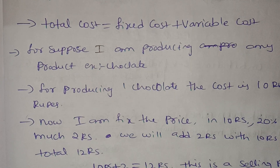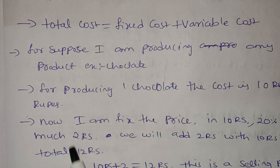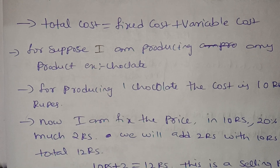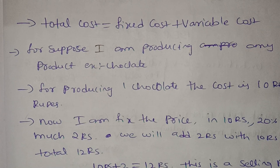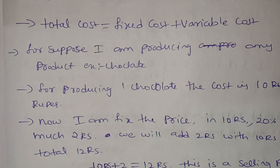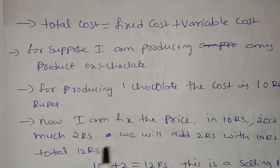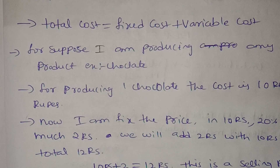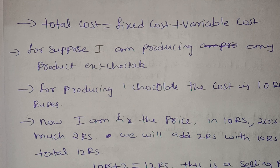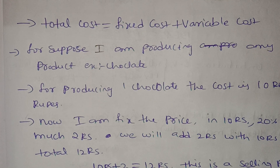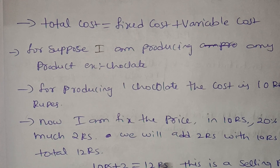We add 2 rupees to the 10 rupees cost. 10 rupees plus 20% equals 2 rupees markup, so 10 plus 2 is 12 rupees. The selling price of the product is 12 rupees. This is called cost-plus pricing.